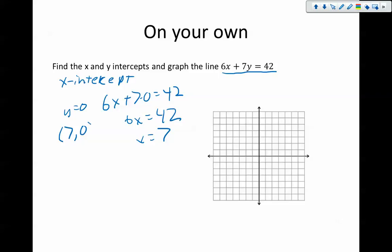So there's 1.7 comma 0. We're going to mark that, 7, 0.